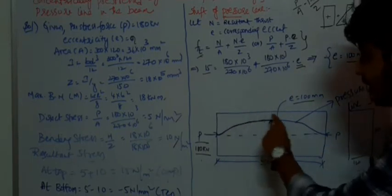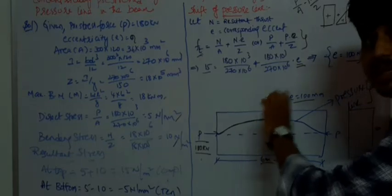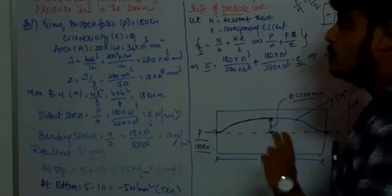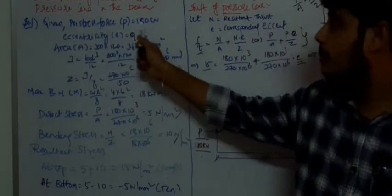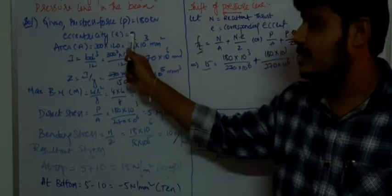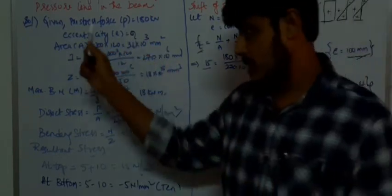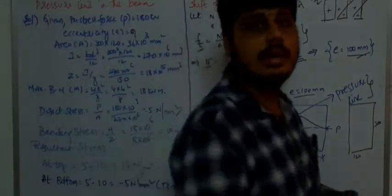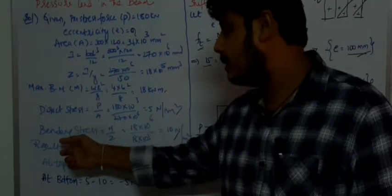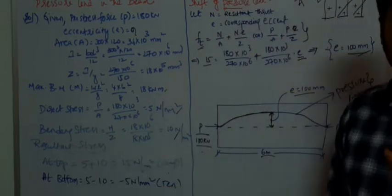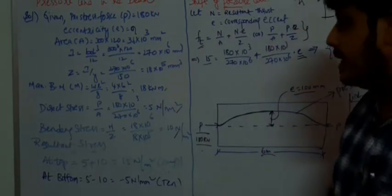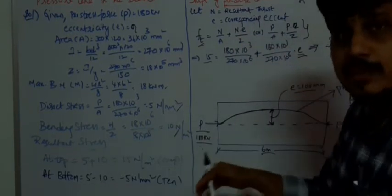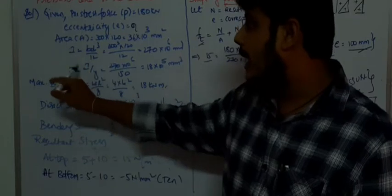We need to find the eccentric distance — the position of the pressure line with some eccentricity. The given prestress force P is 180 kN with eccentricity E₀. Recall that prestressed concrete works on the combination of direct stress and bending stress, which gives the resultant stress. Here we calculate the area, moment of inertia I, and section modulus Z.